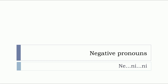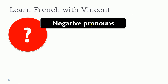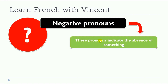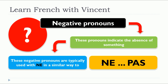In this lesson, we will see together the negative pronouns. More precisely, we will see ne...ni...ni. So the first thing we need to define is the negative pronouns — these pronouns indicate the absence of something. These negative pronouns are typically used with ne in a similar way to ne...pas. So instead of pas, we will use the negative pronouns: ne and then your negative pronoun.